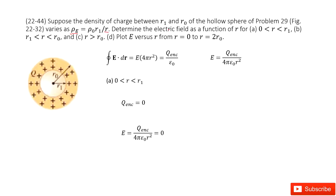The first part tells us R is larger than 0 and smaller than R1. We can draw the Gaussian surface and write down Gauss's law: the electric field times the Gaussian surface equals the enclosed charge divided by epsilon naught. So E equals the enclosed charge divided by 4π epsilon naught R². Inside this Gaussian surface, there is no enclosed charge, so E equals 0.